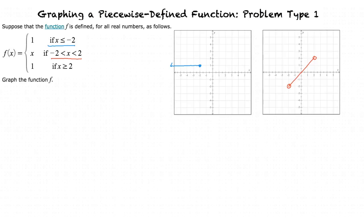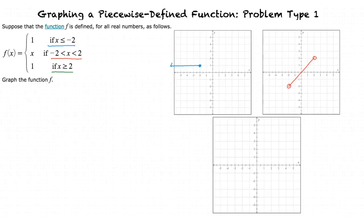Now we are going to graph our final piece: f of x is equal to 1 where x is greater than or equal to 2. Once again, we are going to graph a straight horizontal line at y is equal to 1. Now let's place the restriction x is greater than or equal to 2 on the graph and plot our endpoint. Since the problem states that x is greater than or equal to 2, our point at x is equal to 2 is completely filled in. Now we can erase all y values less than x is equal to 2, and our third and final piece of our piecewise function is now complete.